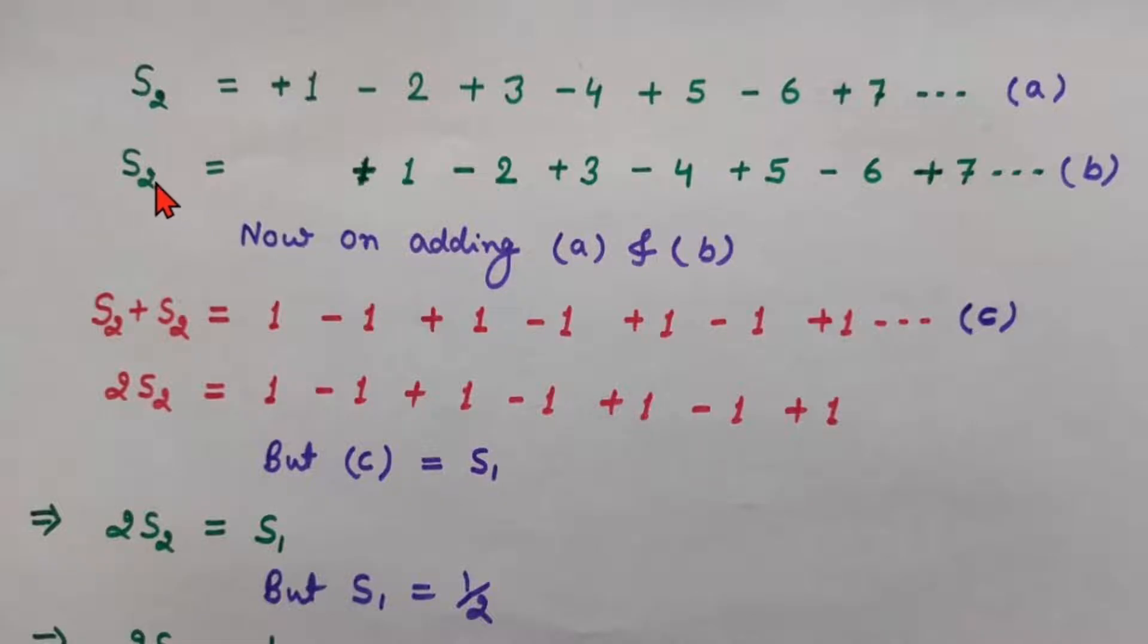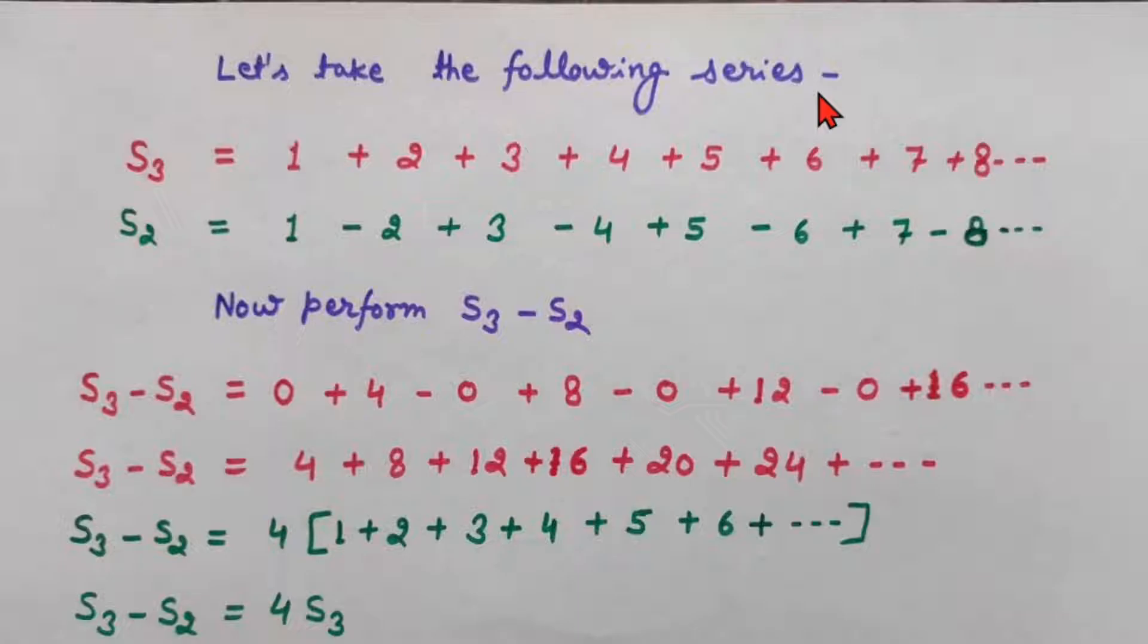And S2 we know was this series. If you don't remember, let's see here. S2 series was this alternate signs of natural numbers. So this is S3 and this is S2. Now what we are going to do is S3 minus S2.